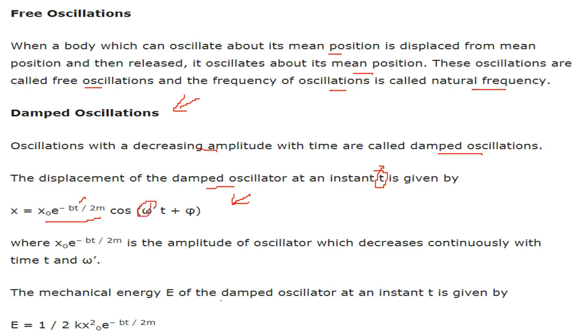The mechanical energy E of this damped oscillator at any instant of time t is given by E equal to half k x square e to the power minus bt by 2m and this is x sub o.